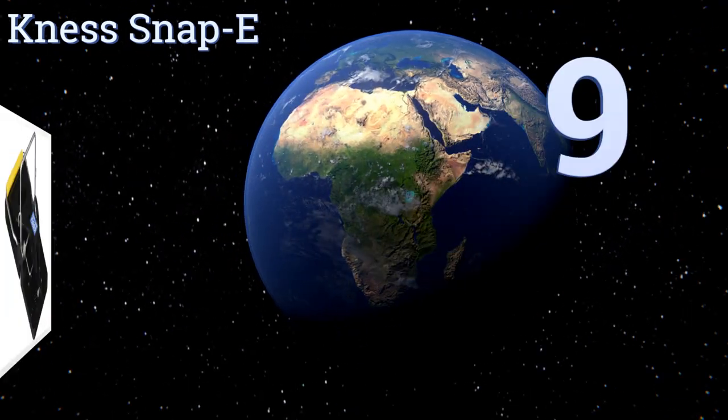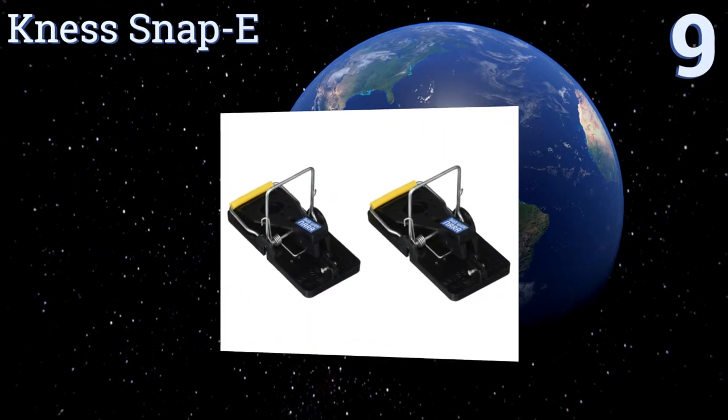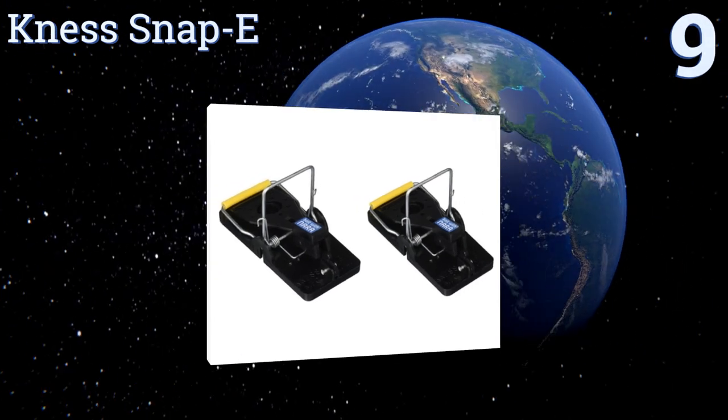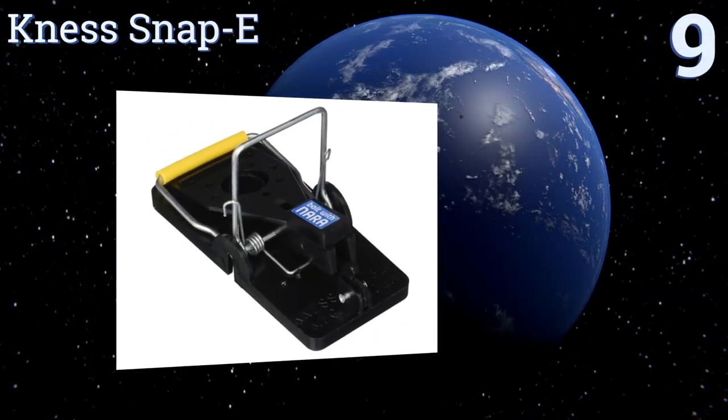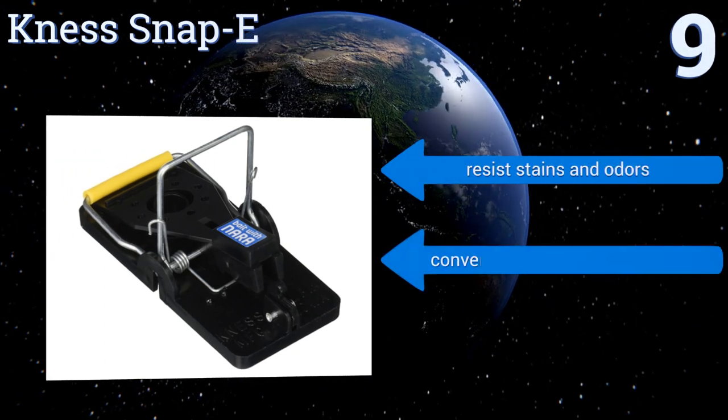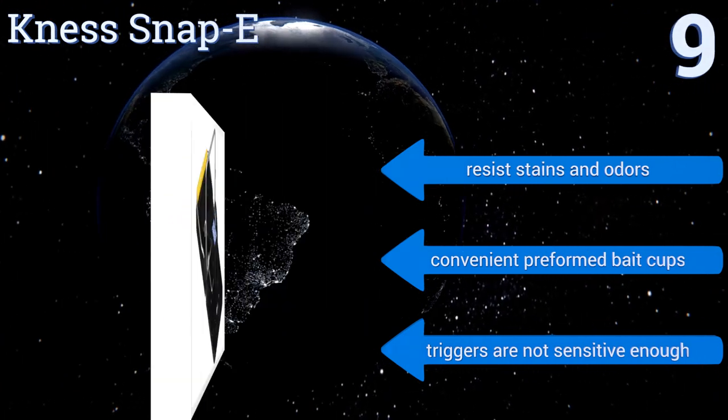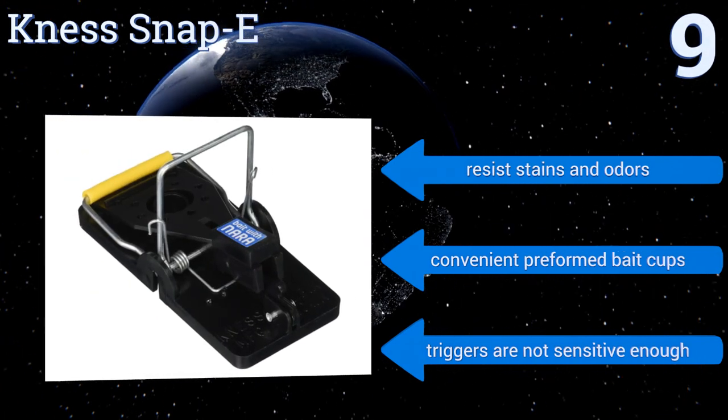Starting off our list at number nine: if you have a mouse infestation in multiple locations across your building or property, the Nest Snappy is a smart economical choice. These traps are constructed with polystyrene and steel, making them a reliably sturdy option. They resist stains and odors and come with convenient pre-formed bait cups, but the triggers are not sensitive enough.